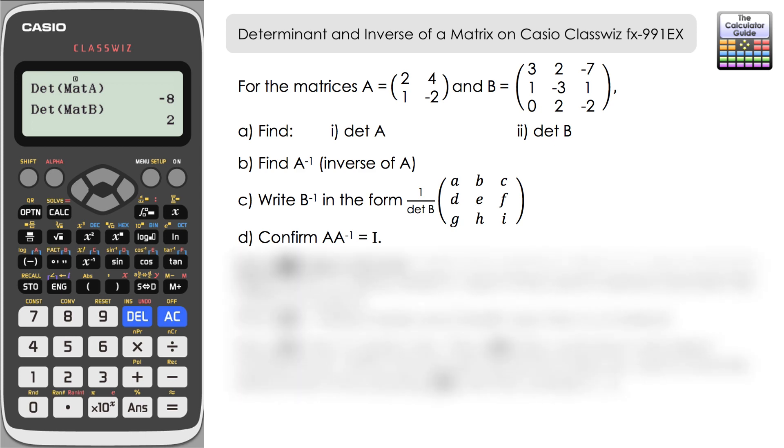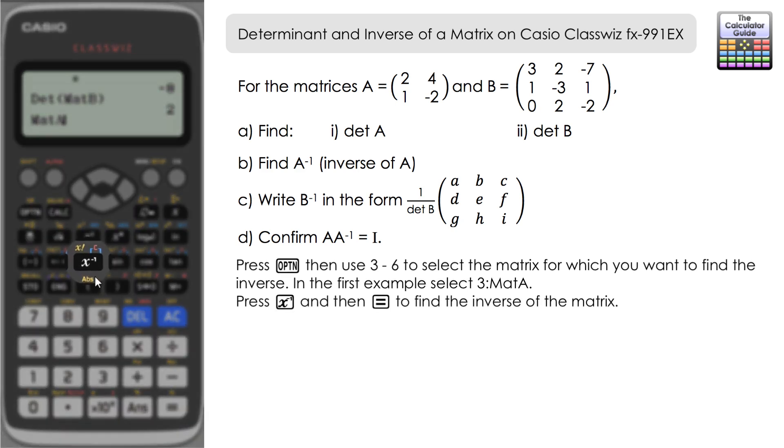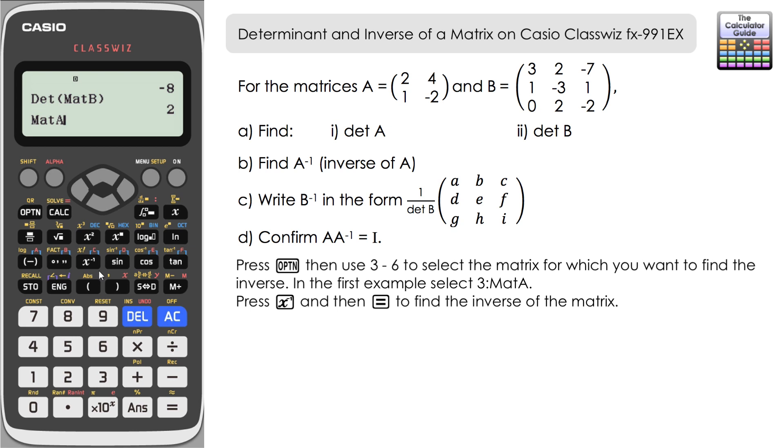So now let's find the inverse of A. Option again and let's just select matrix A which is 3, and then all we need to press is the button here to the power of minus 1. That will represent the inverse in this case, so matrix A to the minus 1.